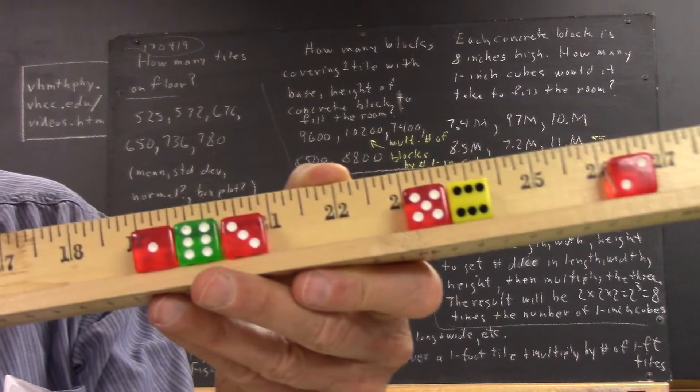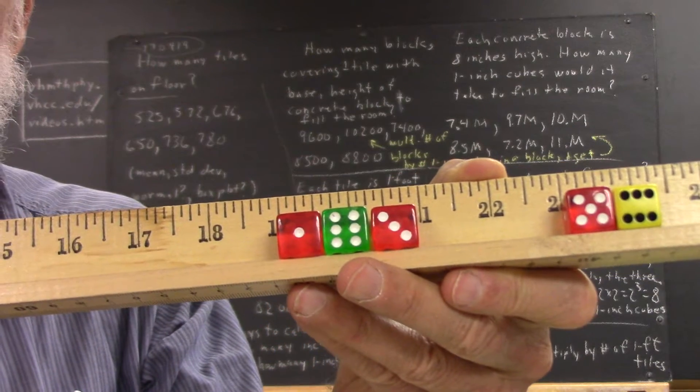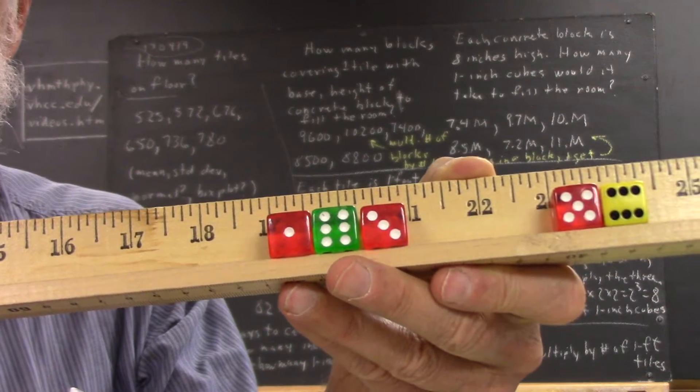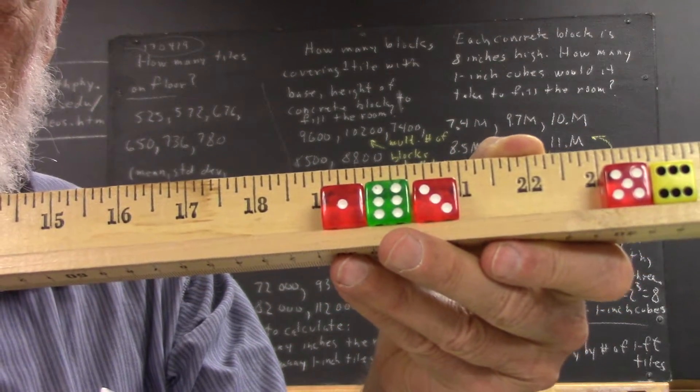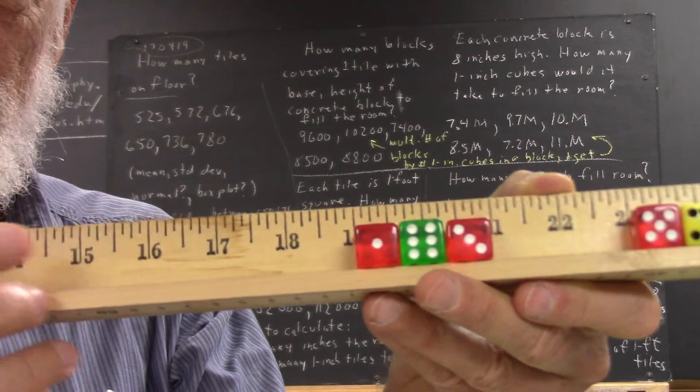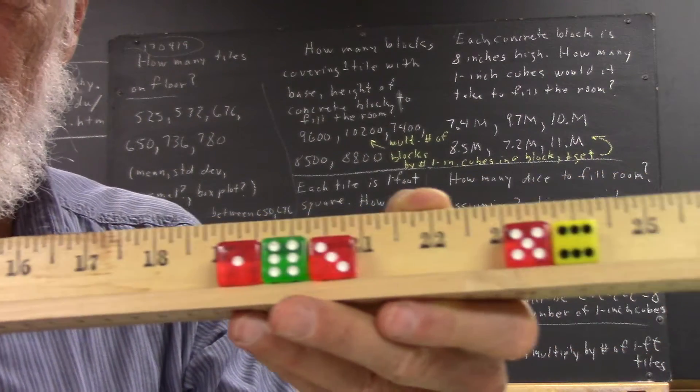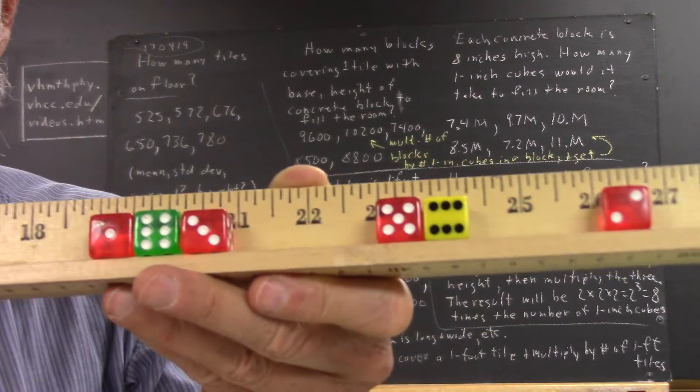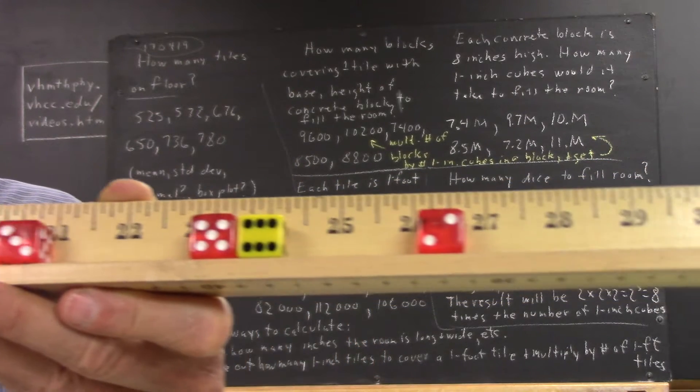Okay, now here we have dice on a ruler in front of a meter stick. So here's three dice in front of the meter stick, and it's actually a meter stick but it's measured in inches. And here is two dice in front of the meter stick, and here's one die in front of the meter stick.